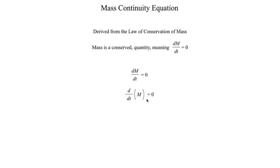We don't like measuring mass in the atmosphere, so if we can get this in terms of something else, that would be nice. One thing we can use is the fundamental definition of density, where density is equal to mass divided by volume. If we solve for mass, we get mass equals density times volume. We can plug that expression for mass into our equation to get the time derivative of ρV equal to zero.